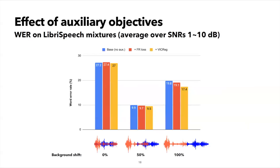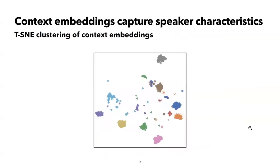Both auxiliary objectives help improve our model. The biggest improvement was provided by VICREG on the 100% shift condition, where it improved the word error rate from 19.8 to 17.4%. Overall, our final model provides a 19.6% relative word error rate reduction over a base transducer trained without the anchor. If we plot the context embeddings and color them by speaker ID, we can immediately see that they group into speaker clusters, which validates our conjecture that the context embeddings capture speaker characteristics.